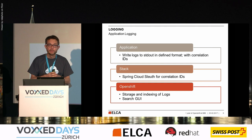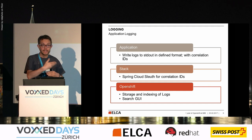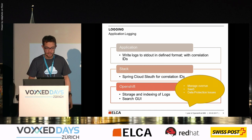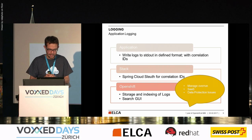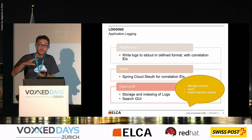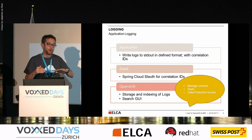Logging: the application's task is to write logs to standard out in a defined format with correlation IDs, so that related requests can be correlated. In the stack we have Spring Cloud Sleuth for this. In OpenShift we have storage, indexing of logs, and a search/query interface. Some learnings: we sometimes have overrun issues — if you write a lot of logs, your network or your provider hits its limit. We currently use a SaaS solution for log storage. Another issue we're working on: data protection, as our logs are currently not stored in Europe, which can be a problem.